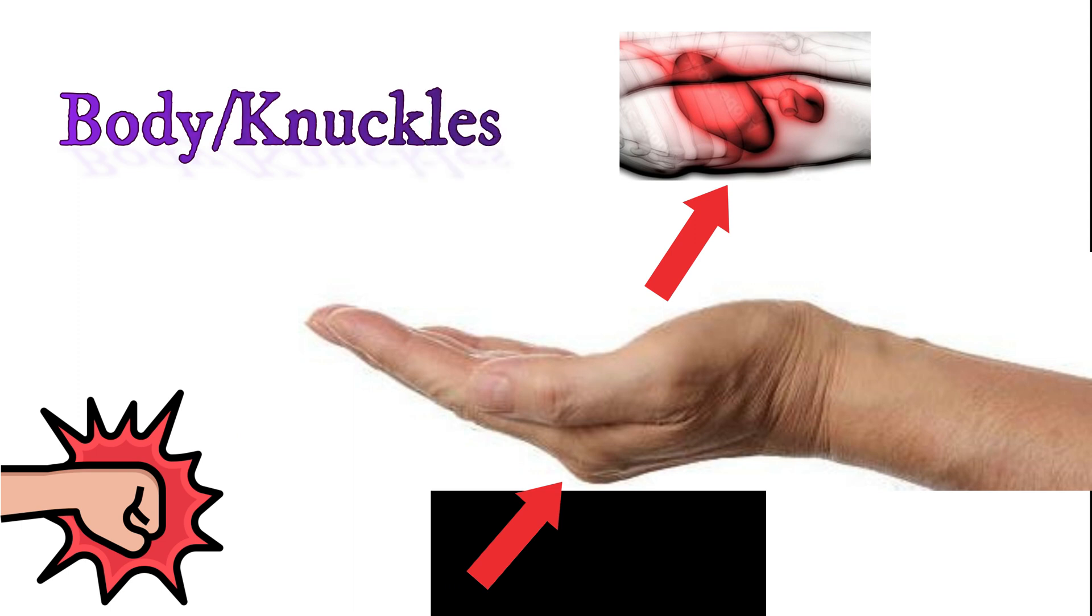Now reverse that with a patient being prone. Look at what's touching the table with a cup position. It's your knuckles. So remember when you punch somebody with your hand, you punch them with the knuckles in their body.